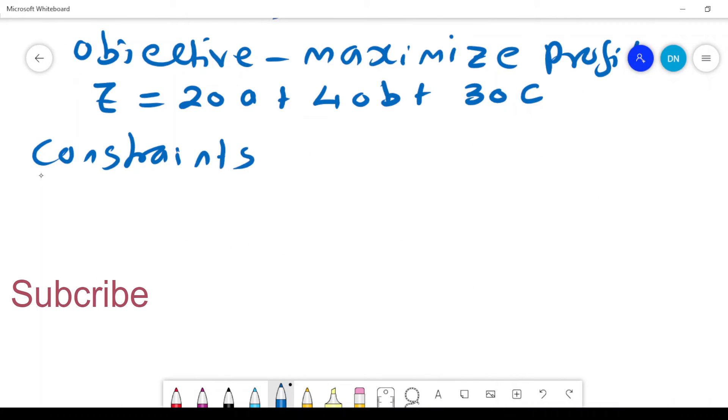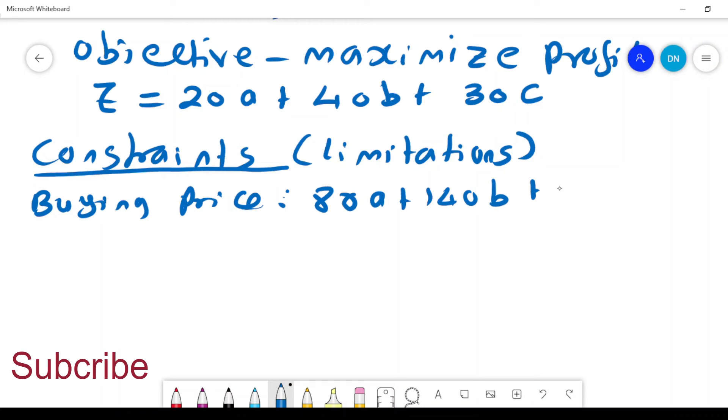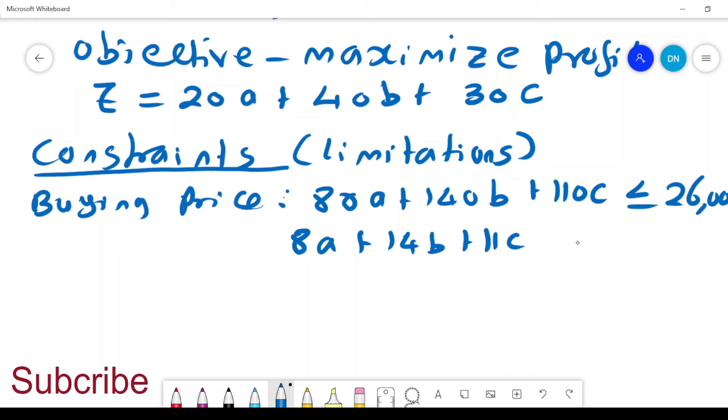We have some limitations or constraints. The first one is the buying price. Type A bicycle will cost you $80, type B will cost $140, and type C will cost $110. So the person does not want to spend more than $26,000. This gives us 80a + 140b + 110c ≤ 26,000.